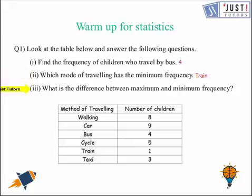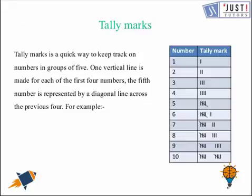In the third one, what is the difference between maximum and minimum frequency? So the maximum frequency is 9 for car and 1 for train. So the difference between 9 and 1 is 8. If you have got the same answers, it's really wonderful that you have good knowledge of statistics. And now we are good to start with tally marks.